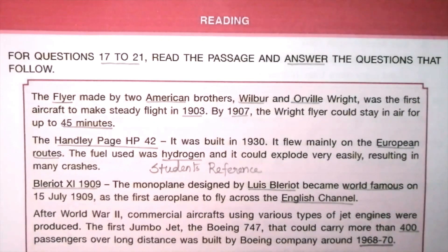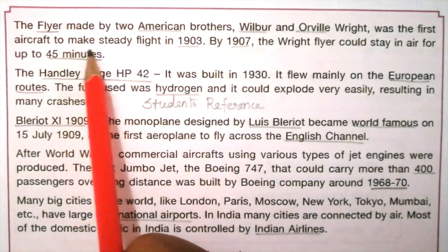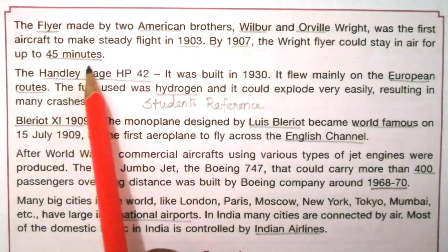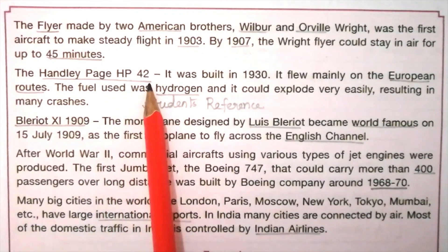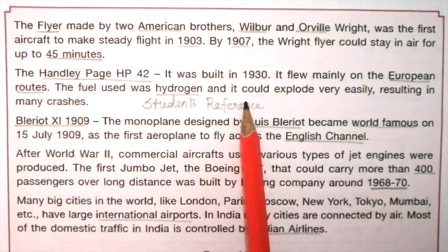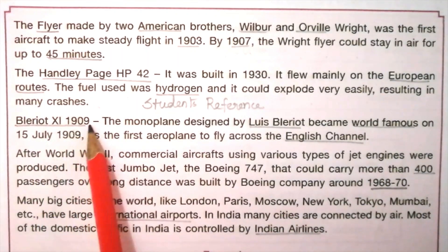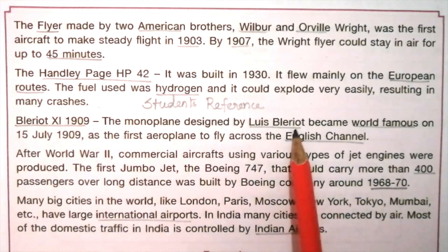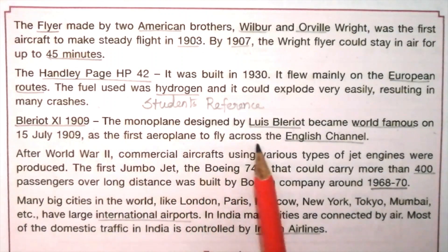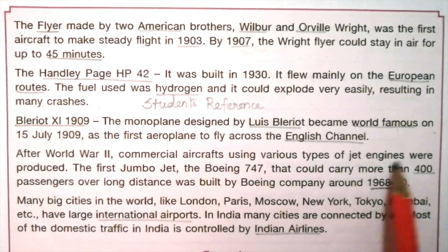For questions 17 to 21, read the passage and answer the questions that follow. The Flyer, made by two American brothers Wilbur and Orville Wright, was the first aircraft to make steady flight in 1903. By 1907, the Wright Flyer could stay in the air for up to 45 minutes. The Handley Page HP42, built in 1930, flew mainly on European routes. The fuel used was hydrogen and it could explode very easily, resulting in many crashes. The Blériot XI in 1909 — the monoplane designed by Louis Blériot — became world famous on 25 July 1909 as the first aeroplane to fly across the English Channel. After World War Two, commercial aircrafts using various types of jet engines were produced.